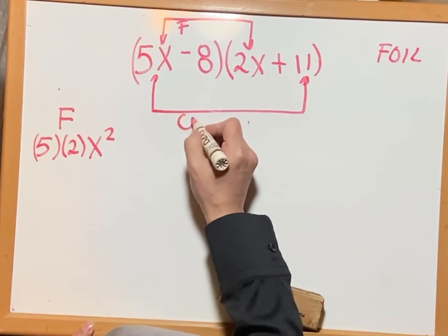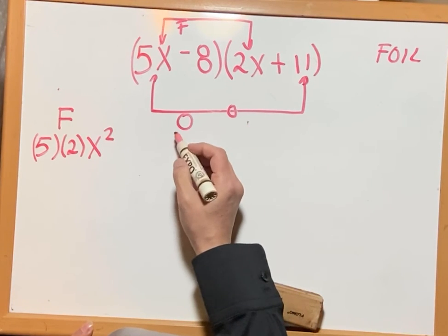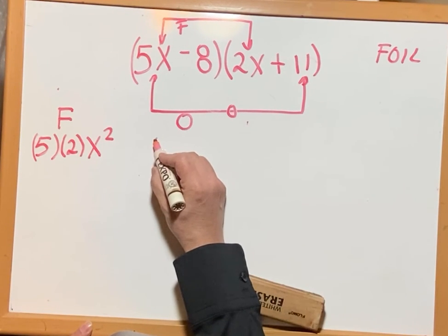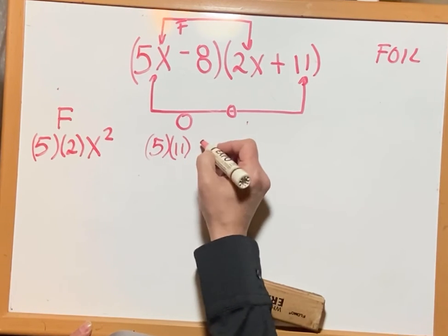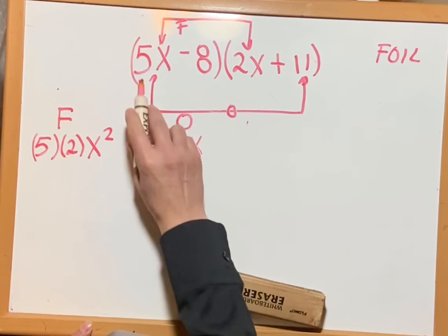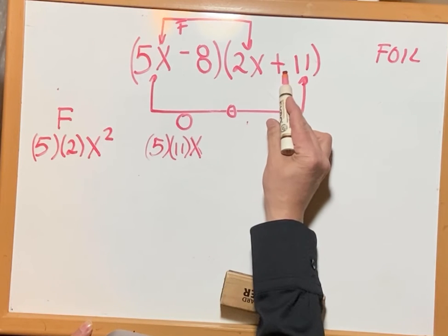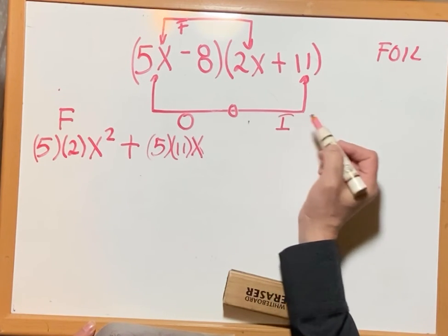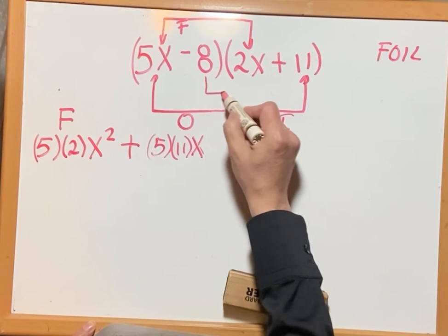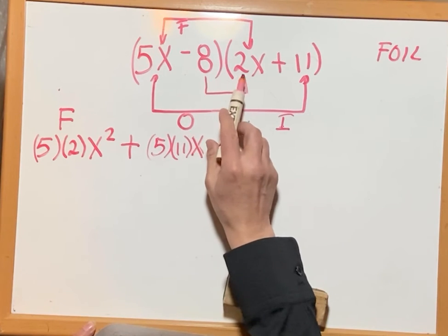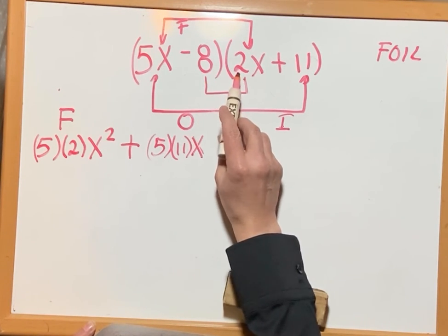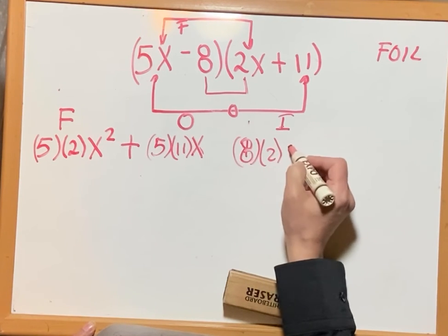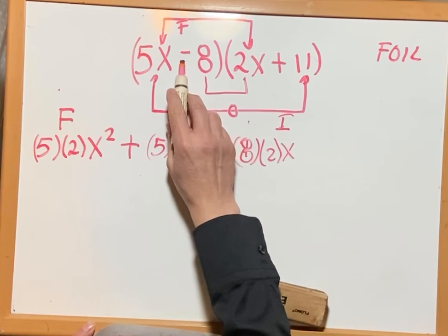These two parts are the outer terms. The outer term should be 5x times 11, so 5 times 11 times x — that's 55x. The sign is positive times positive, so it's going to be positive. Now the inner part — I for inner — the product of the inner terms should be 8 times 2, and the sign is going to be negative.